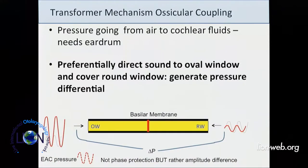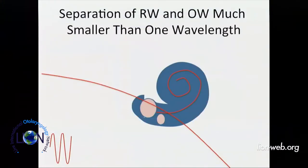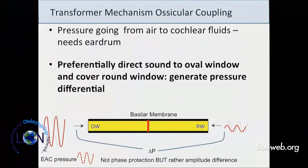If you unwrap the cochlea — this is the oval window and round window with the basilar membrane between them — you need to generate a pressure differential across those. Otherwise there's no movement of the basilar membrane. You preferentially want to direct sound to the oval window and cover the round window to generate a pressure differential. What the middle ear does is amplify pressure at the oval window and drop it a little at the round window, creating a big pressure differential.